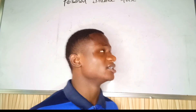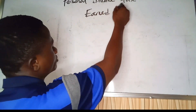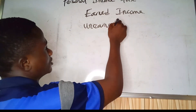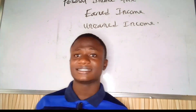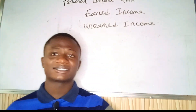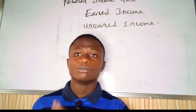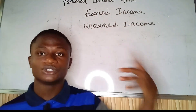Proceeding with that, there are two types of income an individual can earn. We have earned income and we have unearned income. These are the two classes of income that an individual can earn. Both are taxable — government applies tax on the two.